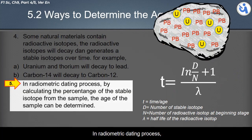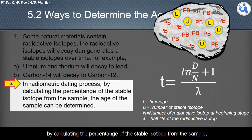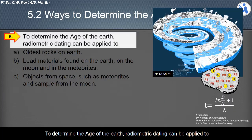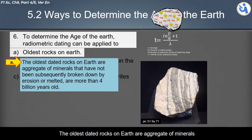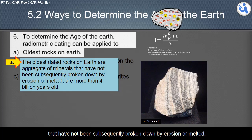In the radiometric dating process, by calculating the percentage of the stable isotope from the sample, the age of the sample can be determined. To determine the age of the earth, radiometric dating can be applied to the oldest rocks on the earth. The oldest dated rocks on earth are aggregates of minerals that have not been subsequently broken down by erosion or melted.